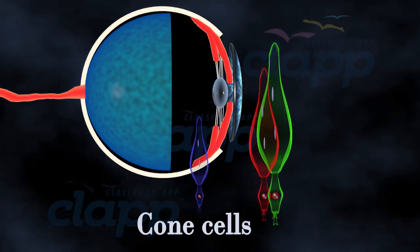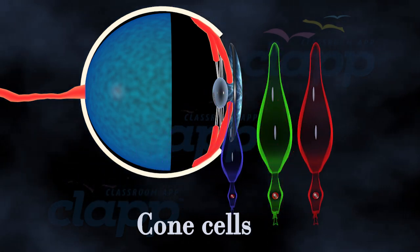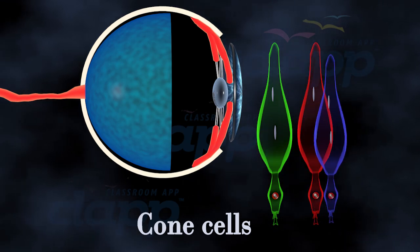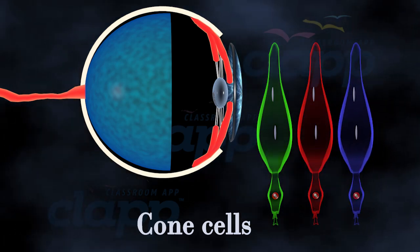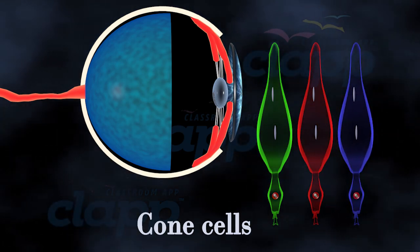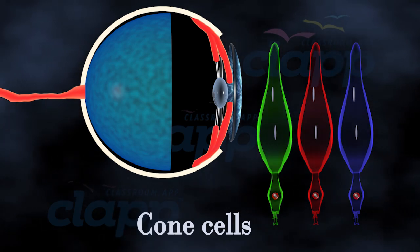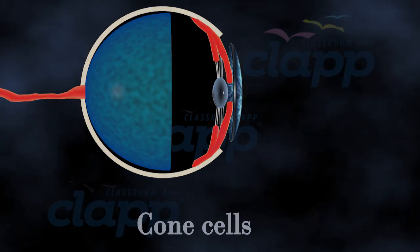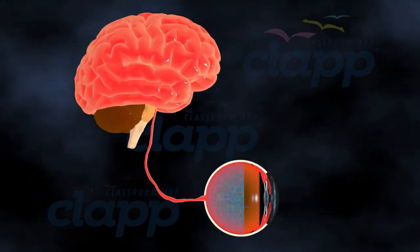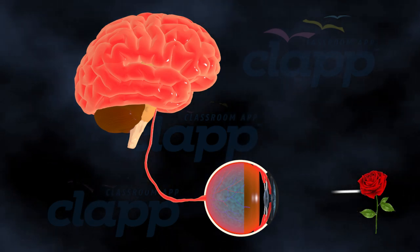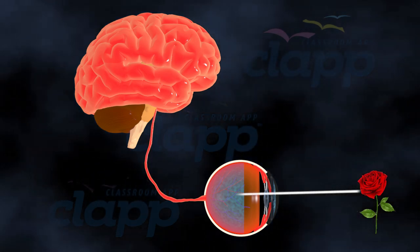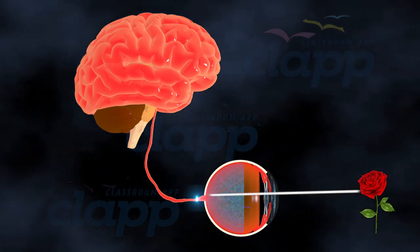Cones, on the other hand, are responsible for our color vision. We have three types of cones, each sensitive to different wavelengths of light, and they work together to allow us to see a wide spectrum of colors.